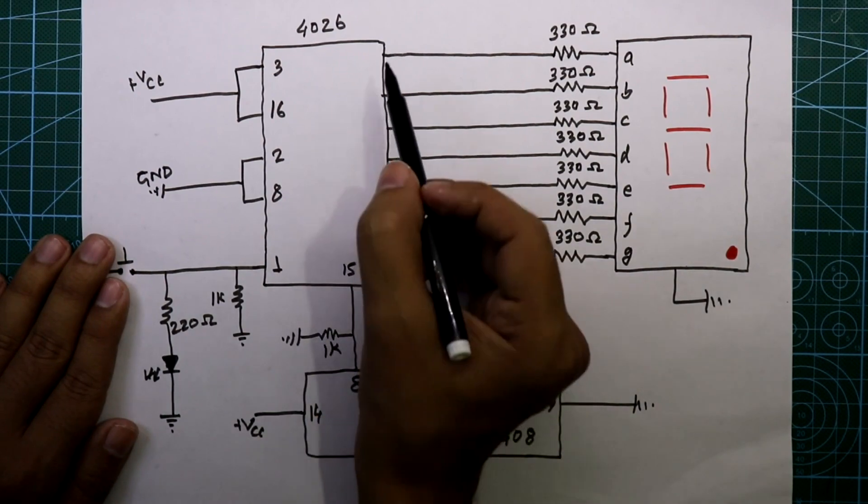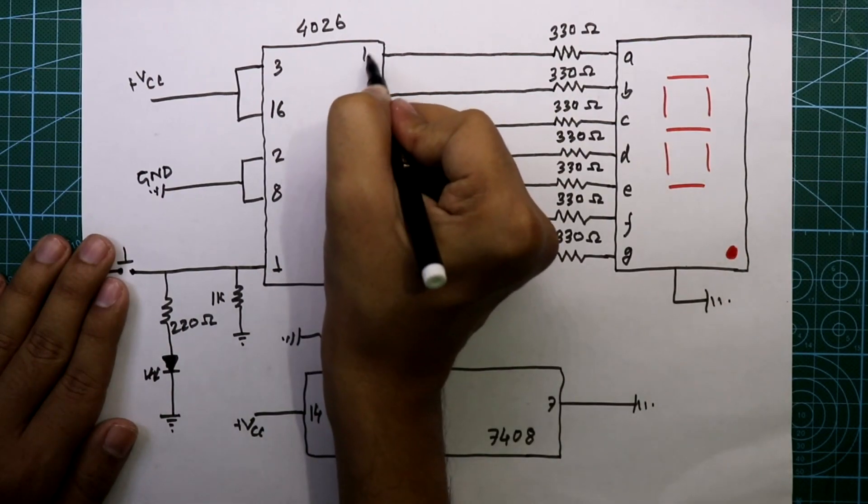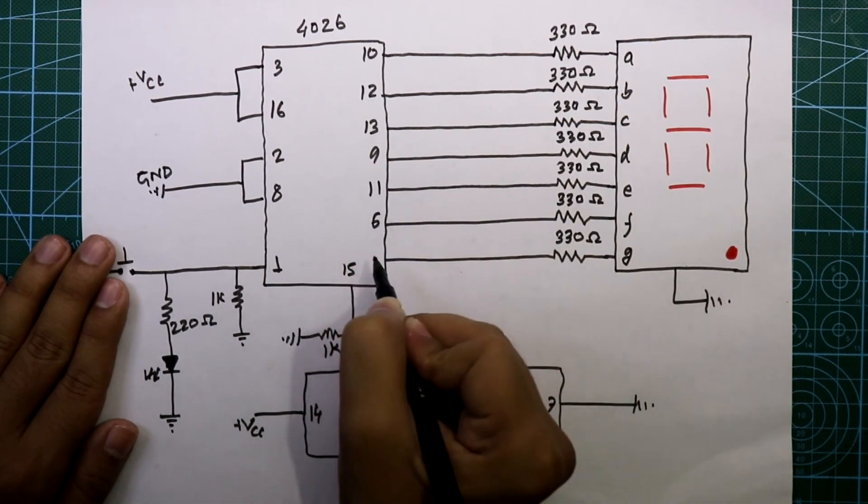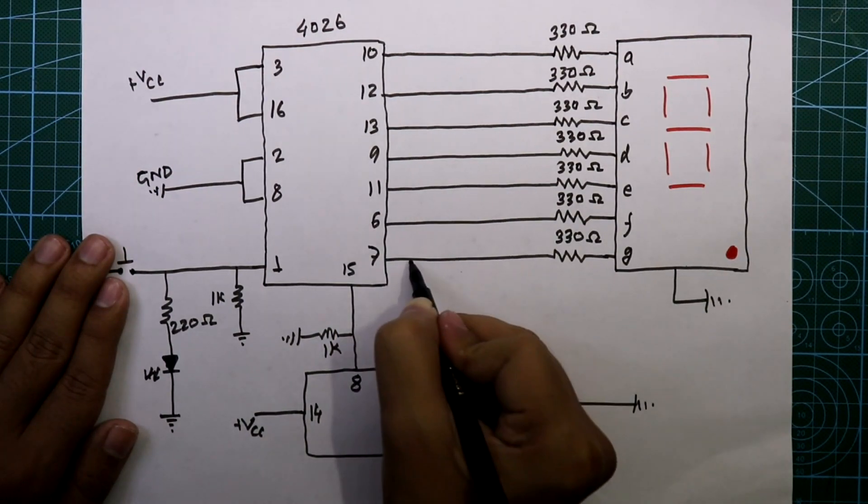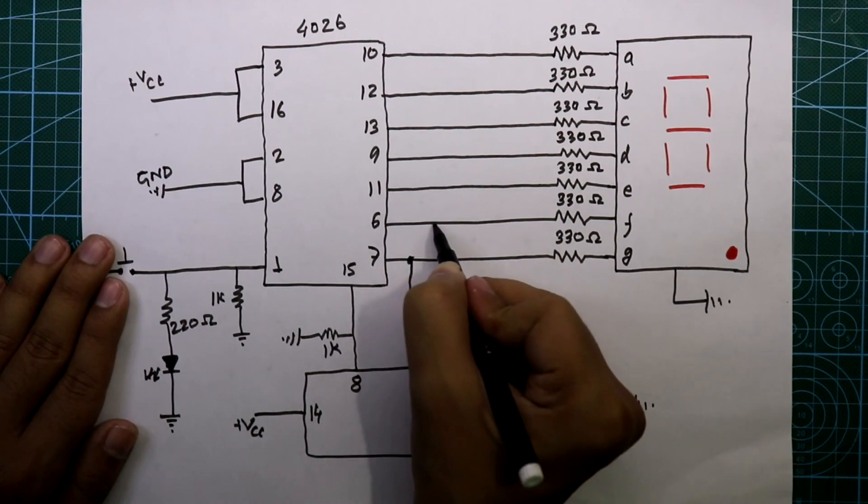Now see, these pin numbers are connected to pin 10, and like this we have to connect. After that, pin number 1 is connected to pin number 7 of 4026, and pin number 2 is connected to pin number 6 of 4026.